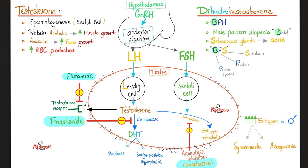How do we convert testosterone to dihydrotestosterone? Via the enzyme 5-alpha reductase. On average, males have more red blood cells than females because males have more testosterone. Males also typically have higher bone density and more muscle mass — both due to testosterone. However, males and females have the same number of muscles, about 620 skeletal muscles per person.